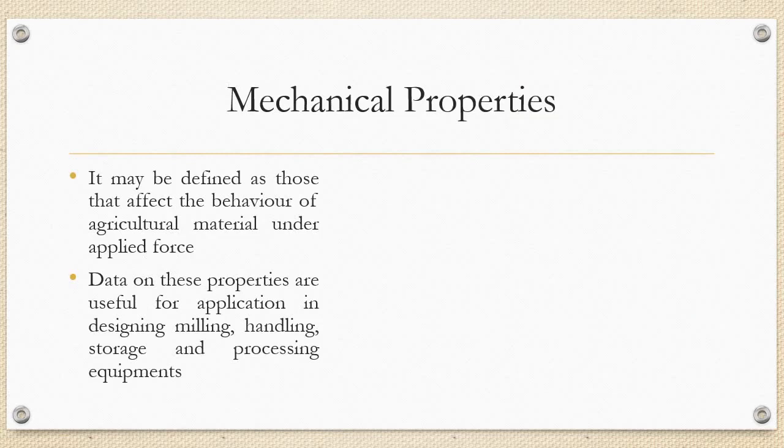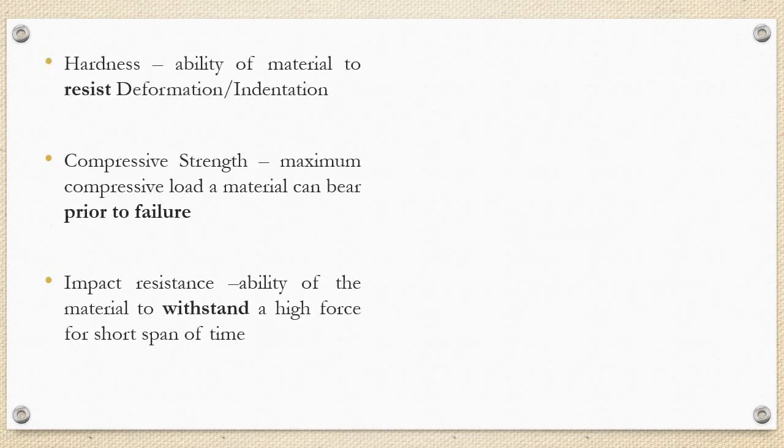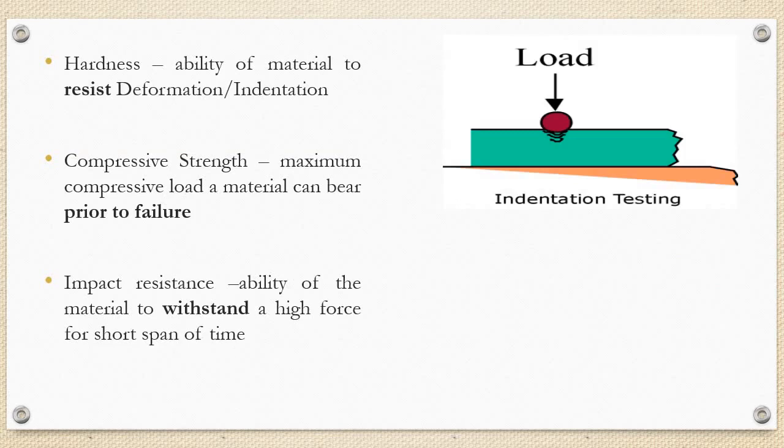Mechanical properties may be defined as those that affect the behavior of agricultural material under an applied force. Hardness, compressive strength, impact resistance are these properties which are useful for application in designing of milling, handling, storage and processing equipments. Hardness is the ability of the material to resist deformation or indentation. Compressive strength is the maximum compressive load a material can bear prior to its failure. The impact resistance is the ability of the material to withstand a high force for a short span of time.